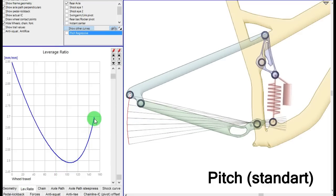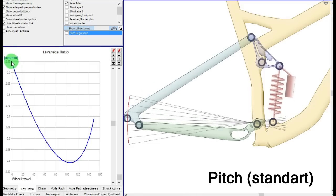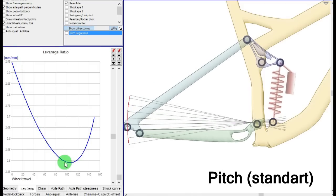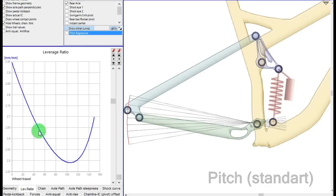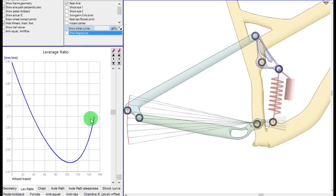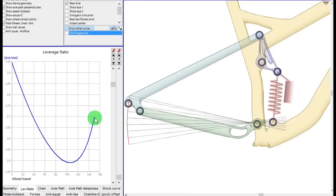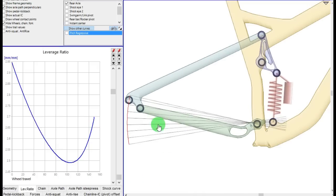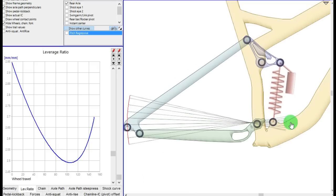And then it increases again the leverage ratio. So this bike is slightly progressive in the first part of the travel, then in the last part of the travel is a regressive bike.